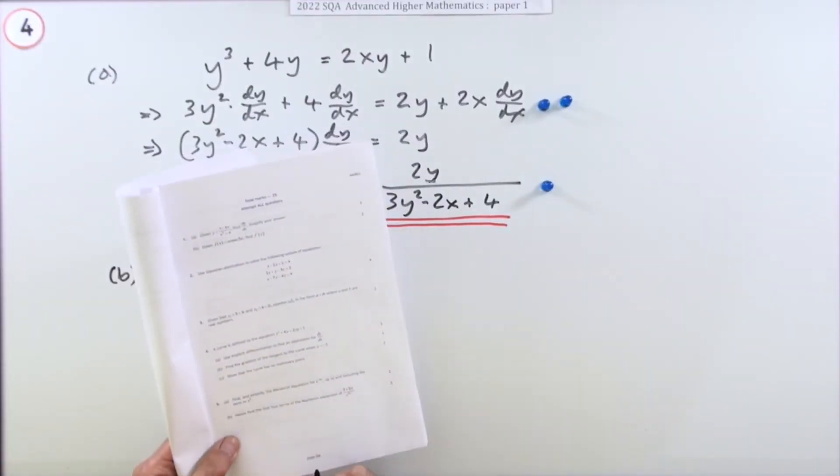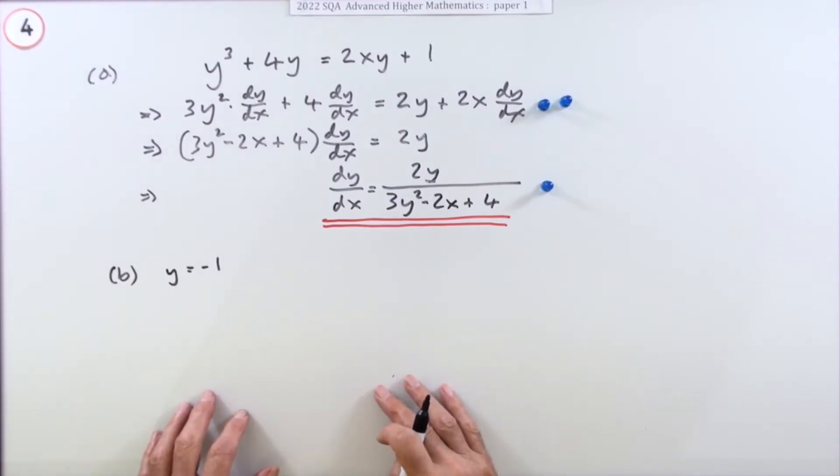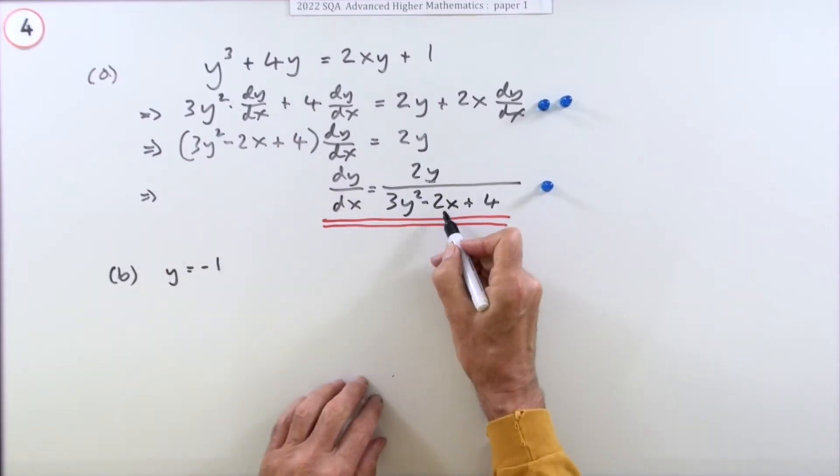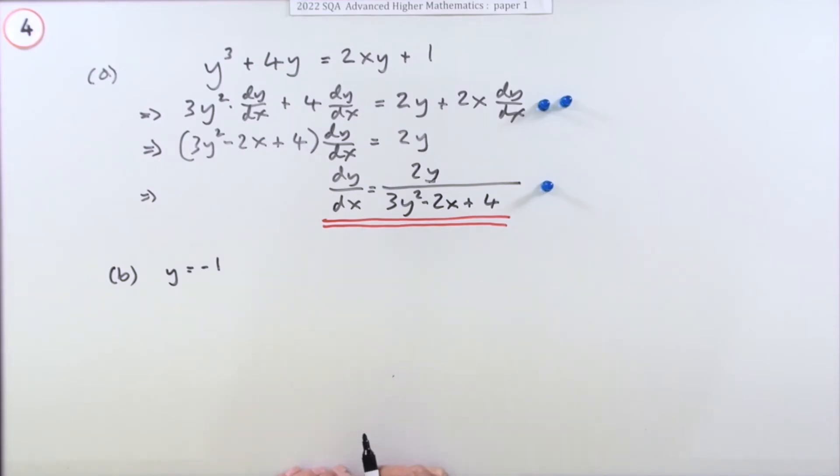Part b, for one mark: find the gradient of the tangent to the curve when y is -1. To find the gradient I need both x and y coordinates. It's only one mark so I have to find x first.